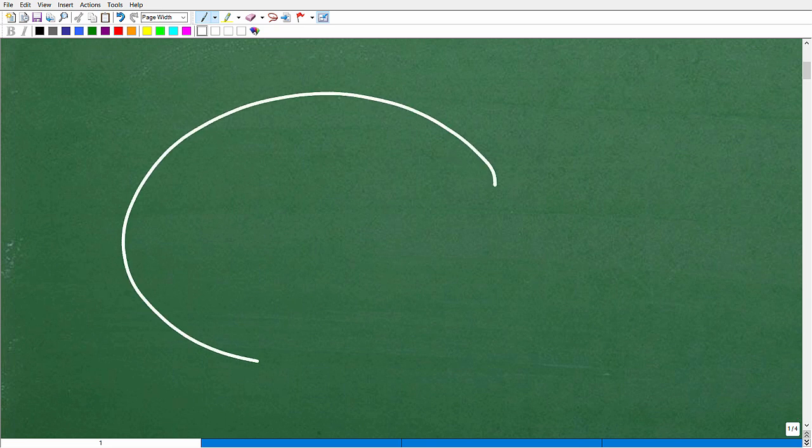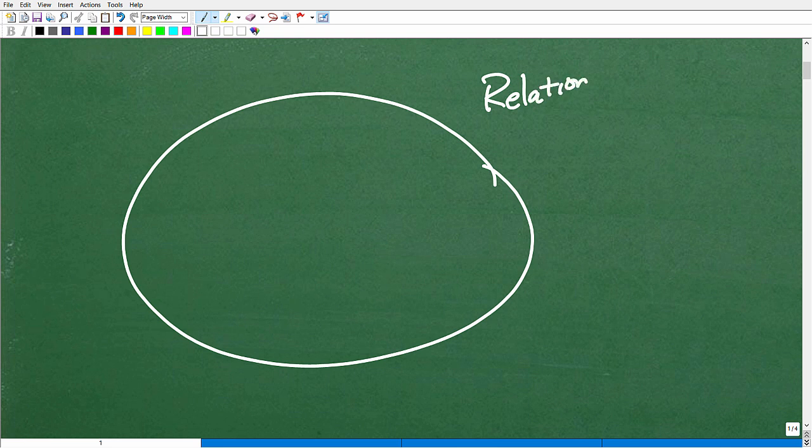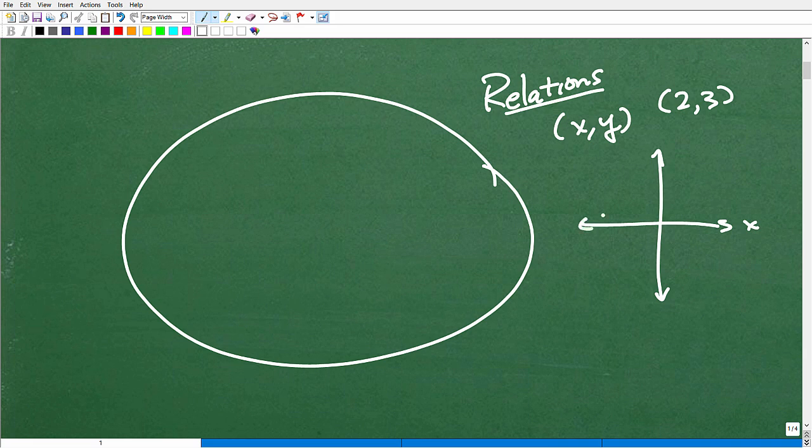So, in mathematics, we have this big old thing called relations. Relations, effectively, are just collections of x, y points, little points like (2,3). I could plot this on an x, y coordinate plane. Here's x, and here's y. So, I could plot (2,3). It might be somewhere like right there. So, relations is nothing more than a point or a collection of points. So, we're really talking about this huge idea of points.